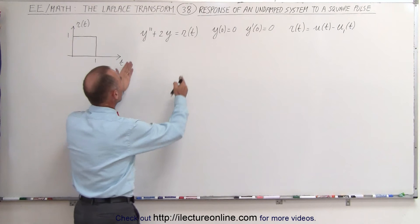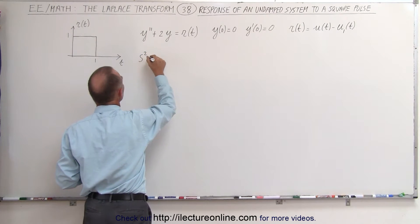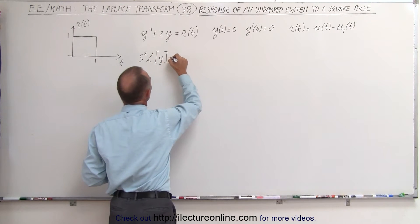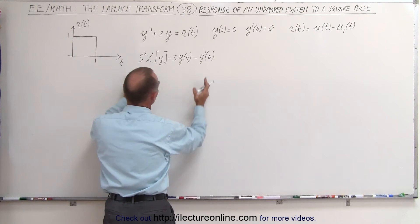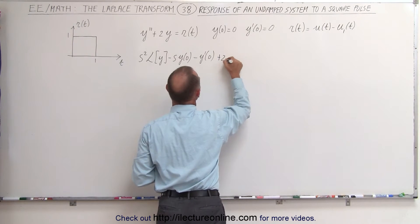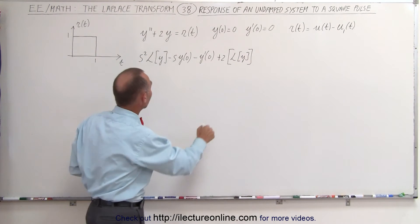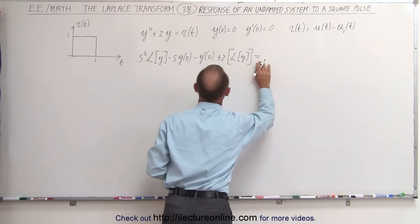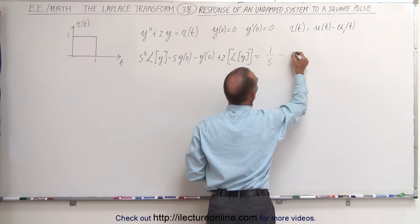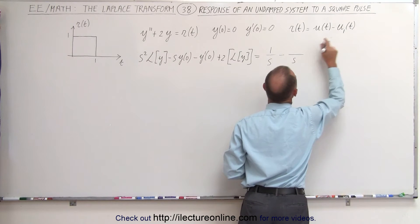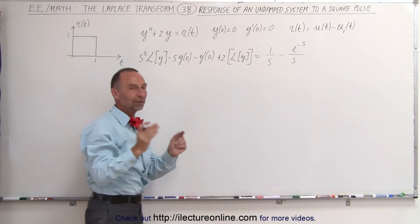Let's go ahead and take the Laplace transform of both sides of the equation. The Laplace transform of y double prime is equal to s squared times the Laplace transform of the function, minus s times the function evaluated at zero, minus the derivative of the function evaluated at zero. This is the Laplace transform of the first term, plus two times the Laplace transform of the function, and that equals the Laplace transform of the right side. Since r equals this square wave, the Laplace transform would be one over s minus one over s times e to the minus s — that's the Laplace transform of the driving function, a square wave for one second.